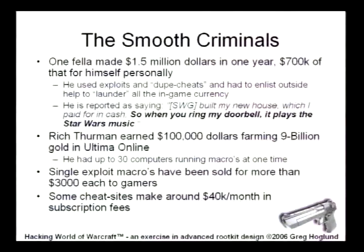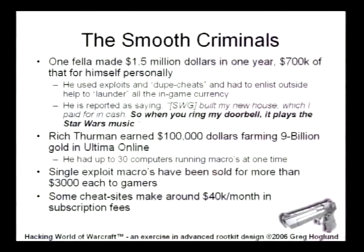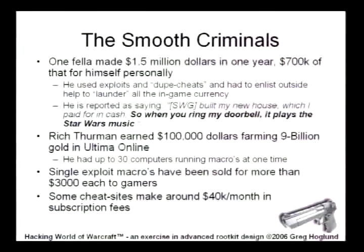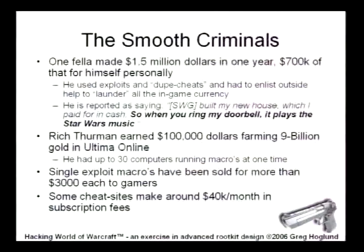Let's talk about what hackers are getting away with. There's one guy whose handle is Smooth Criminal, who specialized in writing exploits for Star Wars Galaxies. He made so much money duping the in-game currency that he had to get IGE to buy a whole bunch of accounts to launder the money. He made $1.5 million in one year, $700,000 of which he kept for himself. He bought a house where the doorbell plays the Star Wars theme song. Rich Thurman made $100,000 farming about $9 billion in gold using a server farm of about 30 machines. On eBay, a single exploit sold for about $3,000. Some cheating sites like XUnleashed make around $40,000 a month — cheating is big business.